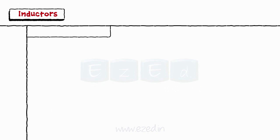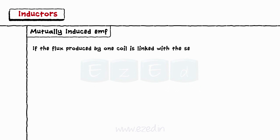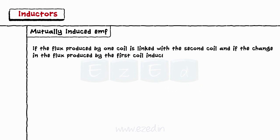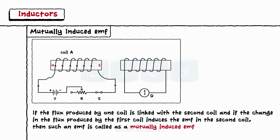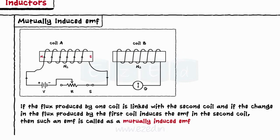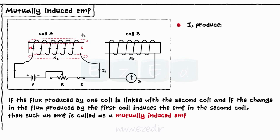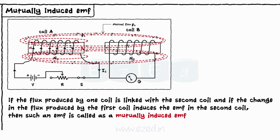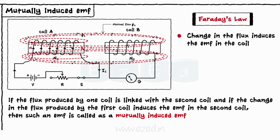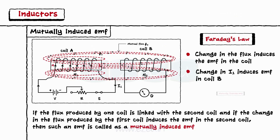The second type of EMF is mutually induced EMF. If the flux produced by one coil is linked with the second coil, and if the change in the flux produced by the first coil induces EMF in the second coil, then such an EMF is called mutually induced EMF. Consider two coils A and B having N1 and N2 number of turns respectively. Current I1 flowing through coil A produces flux phi1. Some part of the flux gets linked with coil B, which we call mutual flux phi2. If we change the magnitude of the current flowing through coil A by variable resistance, the linked fluxes phi1 and phi2 also change. According to Faraday's law, change in the flux induces EMF in the coil. Thus, any change in current I1 induces EMF in coil B. This phenomenon is called mutually induced EMF.